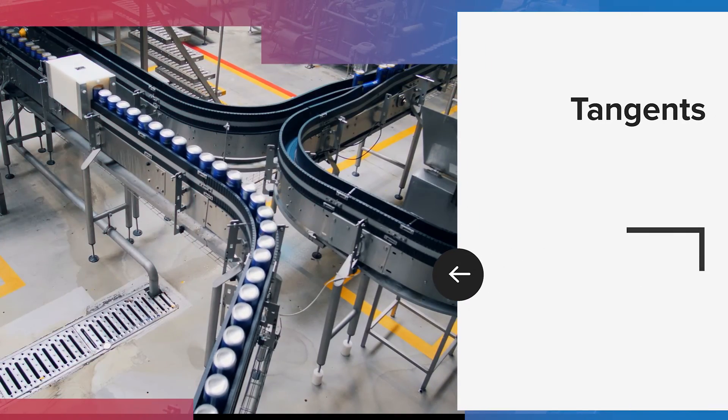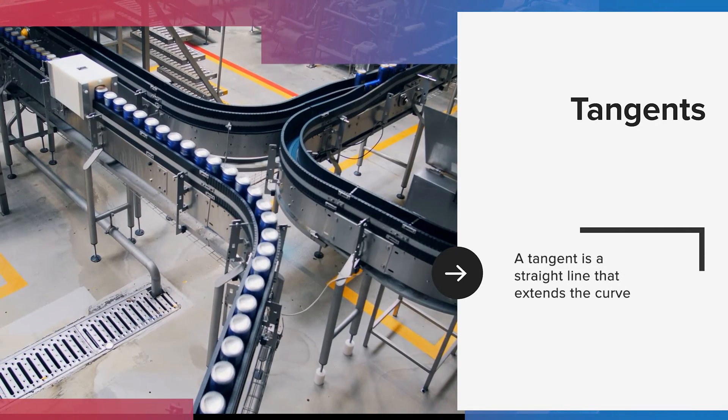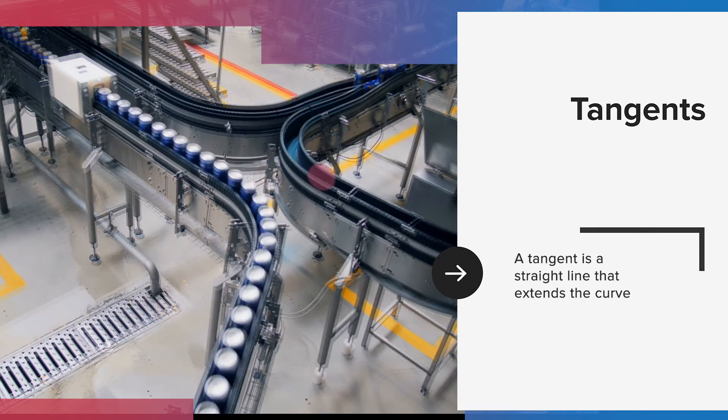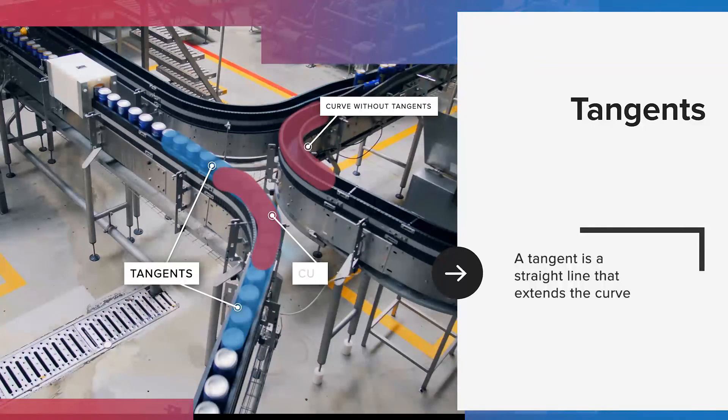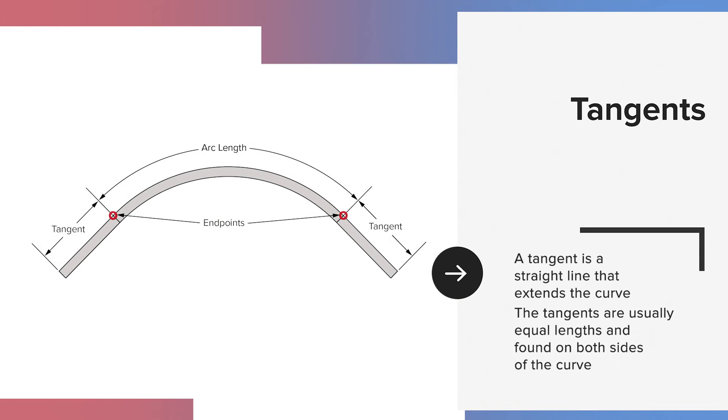Let's start with what a tangent is. A tangent is a straight line that extends the curve. You can see the diagram on the left showing tracks with and without tangents. Tangents need to be measured and noted on the quote request.